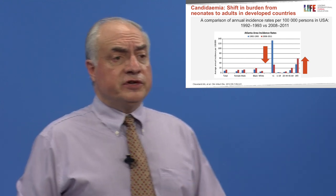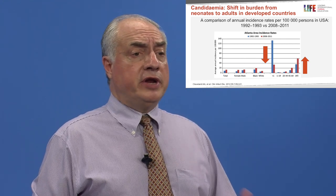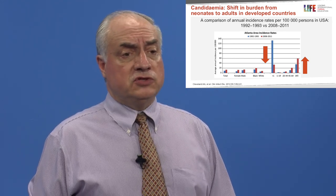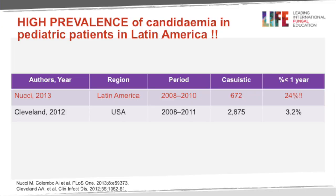There is a strong difference in the occurrence of candidemia in neonates and children between the northern and southern hemispheres — the rates are completely different. In Latin America, a multicenter study from 2008–2010 evaluated 600 patients and found that 24% of cases involved candidemia occurring in patients less than one year of age. In contrast, in the USA, only 3% of more than 2,000 cases of candidemia were reported in the same age group. Geography may impact incidence rates, natural history, species distribution, and mortality of candidemia.